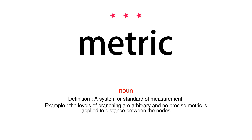Noun. Definition: a system or standard of measurement. Example: the levels of branching are arbitrary and no precise metric is applied to distance between the nodes.